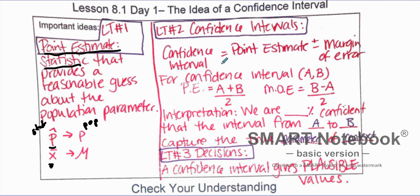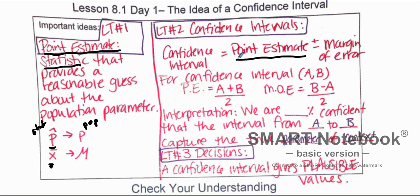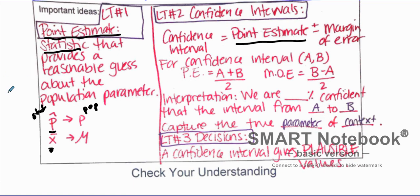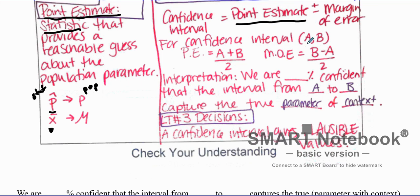To construct the confidence interval, we take our point estimate — the statistic we have — and we add and subtract a margin of error. We take a middle ground and say we want to be a certain value away on each side. Plus or minus that margin of error gives us our confidence interval.